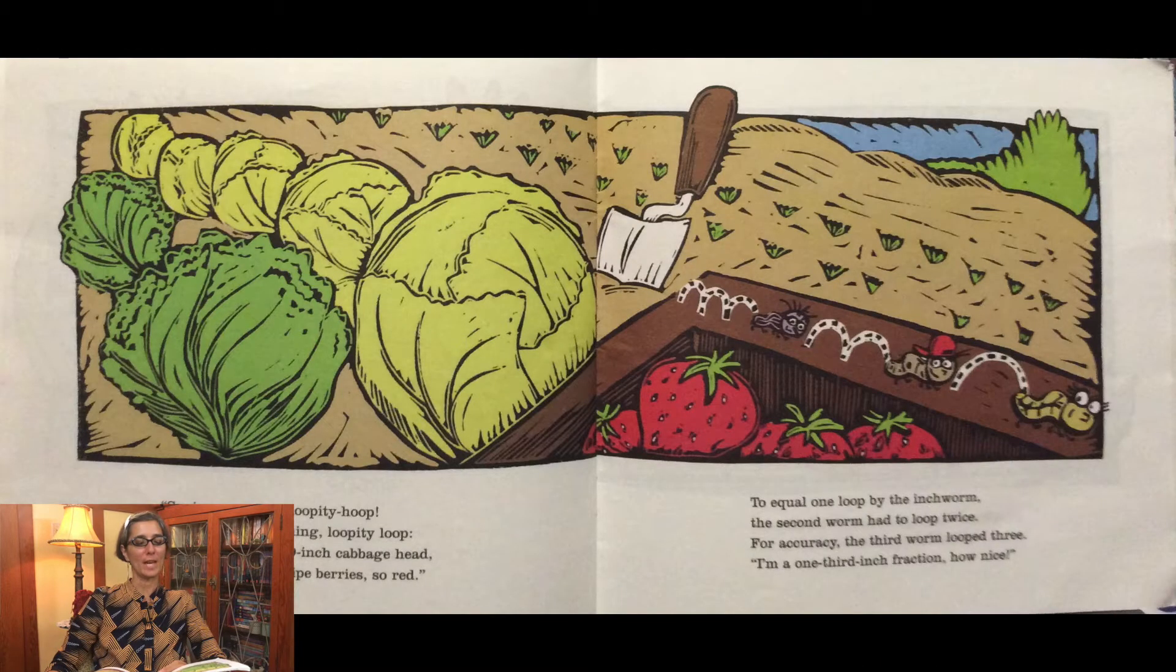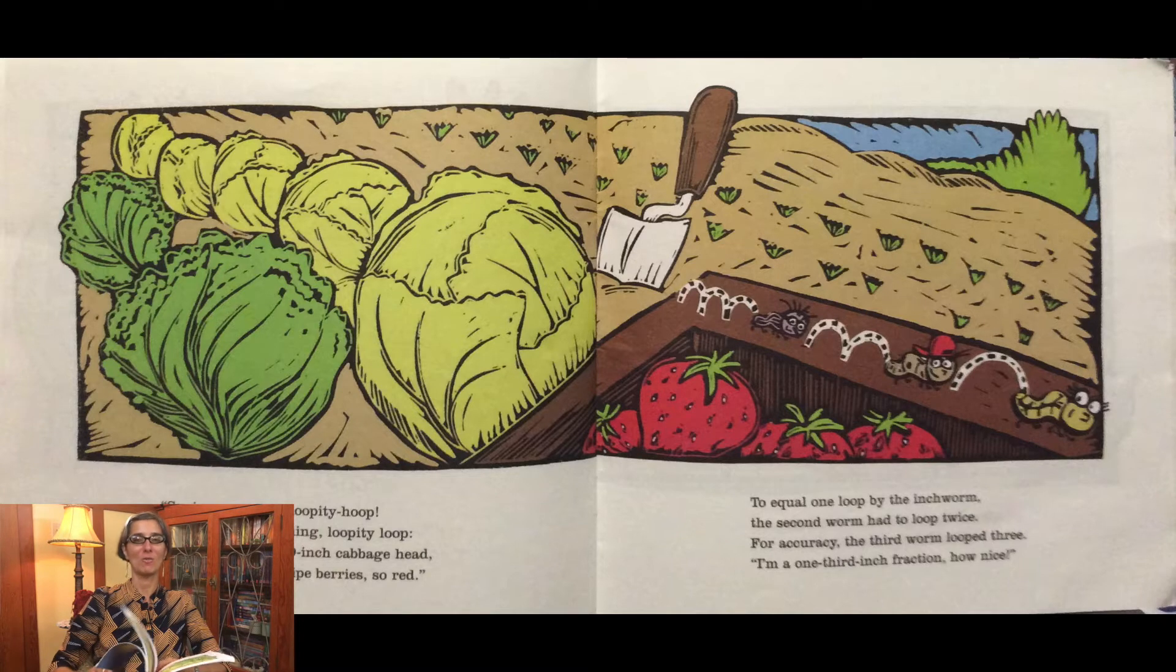Squirmy wormy hoppity hoop. We measure everything loopity loop. Eight inch leaf lettuce, nine inch cabbage head, and some one and one third ripe berries so red. To equal one loop by the inchworm, the second worm had to loop twice. For accuracy, the third worm looped three. I'm a one third inch fraction. How nice.